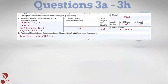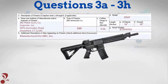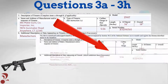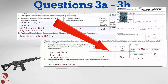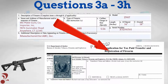For Questions 3A through 3H, validate that information for every NFA firearm received exactly matches information as engraved on the item. Information appearing in these questions will be utilized for any subsequent Form 3 or Form 4 completed for these firearms.